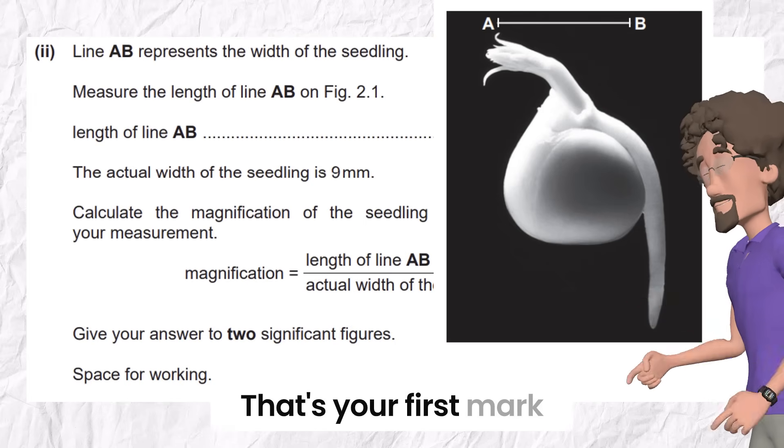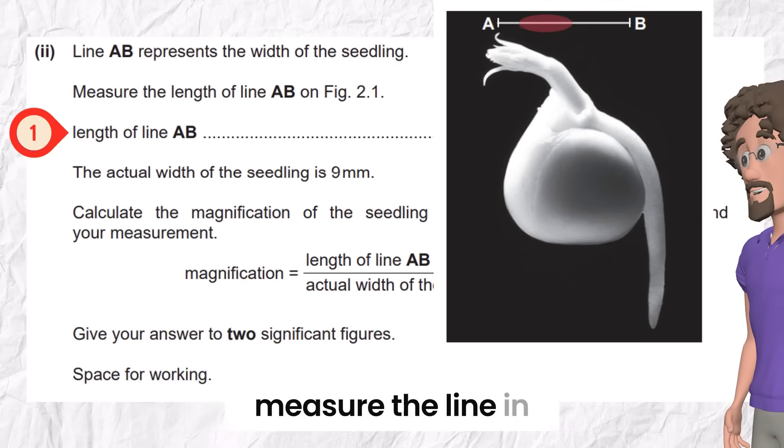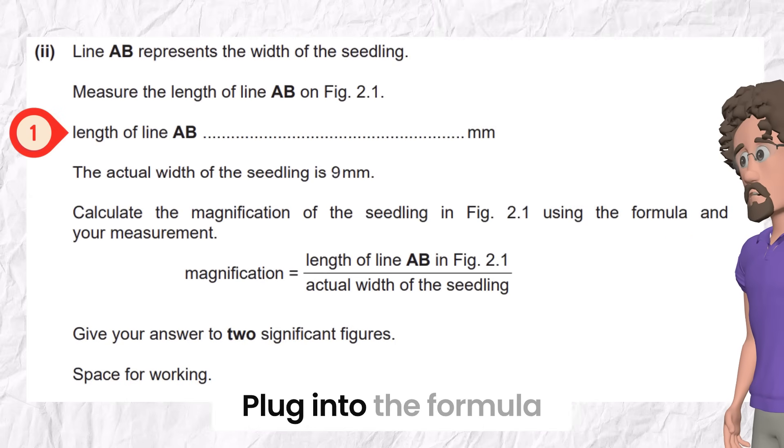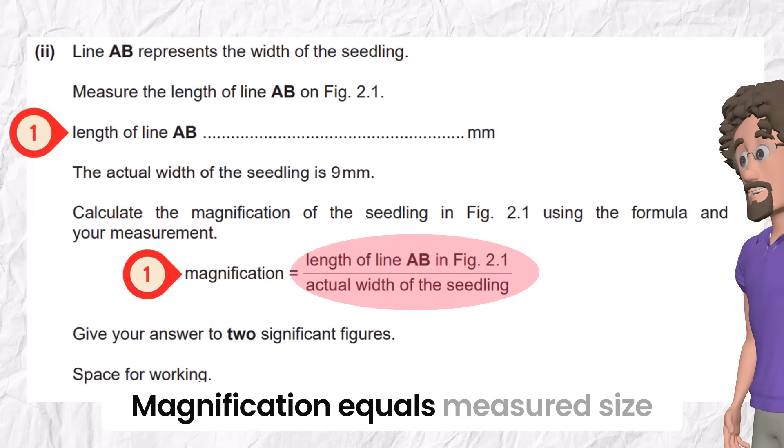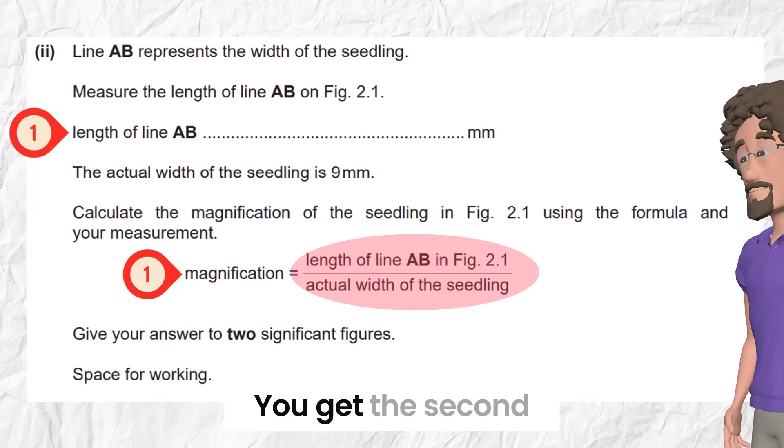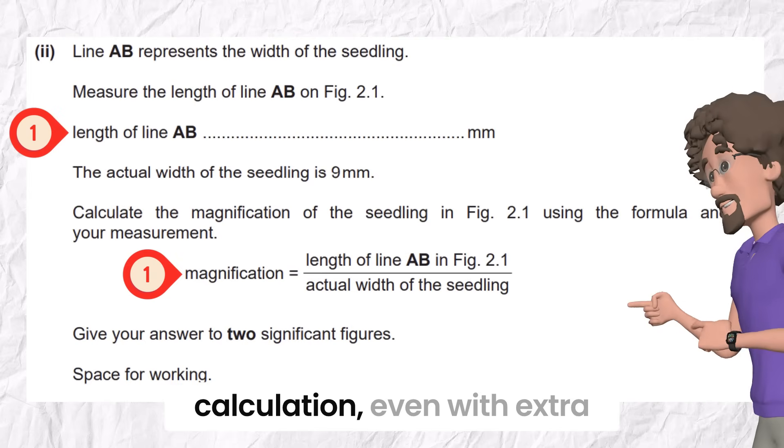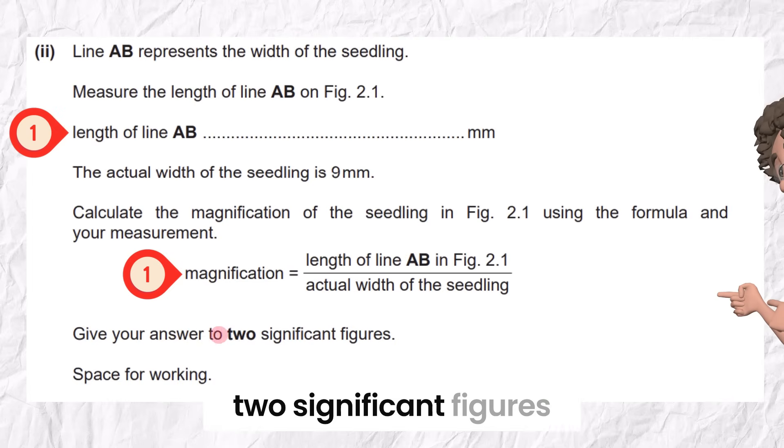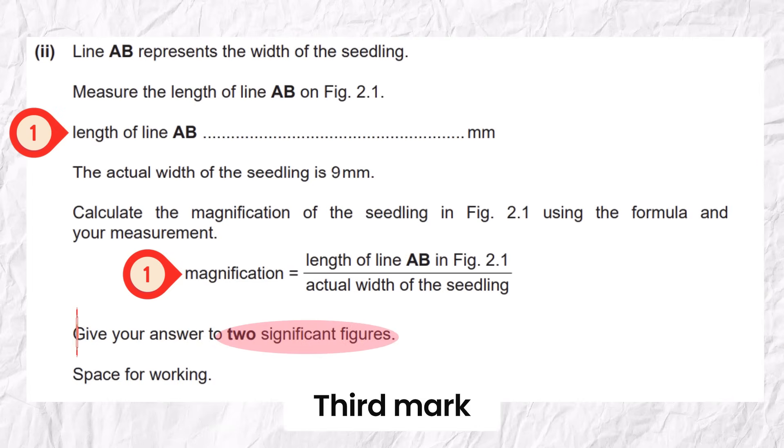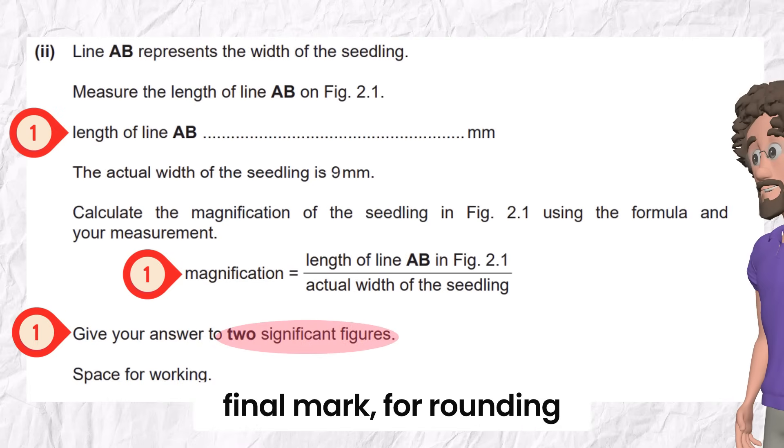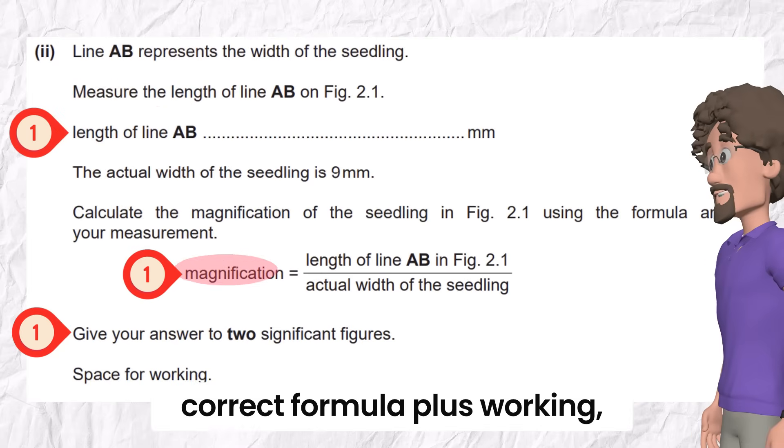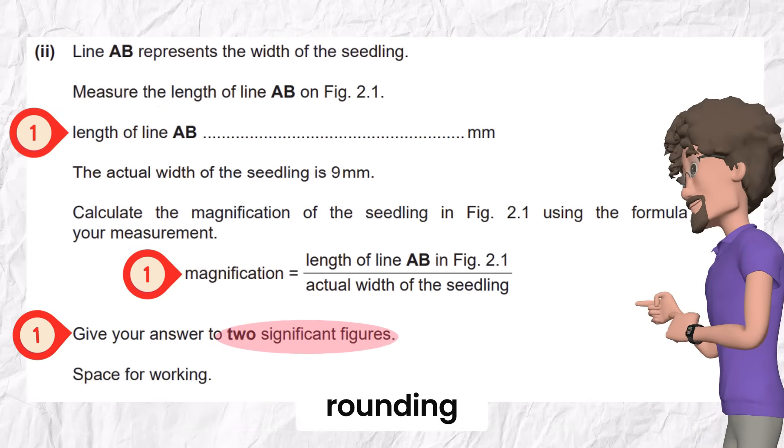Use a ruler and measure the line in millimeters. MM. That's one mark for correct measurement. Step 2: Plug into the formula. Second mark. Use the formula. Magnification equals measured size divided by actual size. You get the second mark just for correct calculation, even with extra decimals. Step 3: Round your answer to two significant figures. Third mark. That's your third and final mark. For rounding it correctly. Mark given: One for correct measurement. One for correct formula plus working. And one for correct rounding.